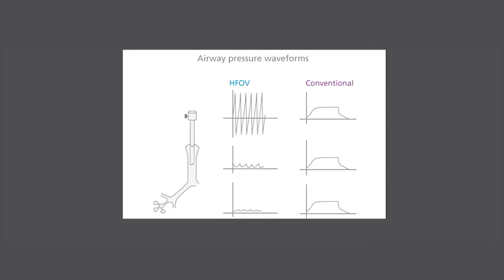The pressure amplitude will be significantly attenuated at the alveolar level by the resistance of the endotracheal tube. The same mechanism can result in severe detriment to ventilation. As secretions accumulate in the endotracheal tube, airway caliber is reduced, resulting in a lower tidal volume.